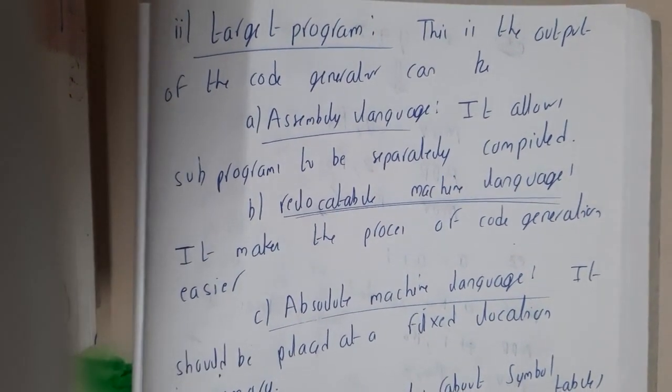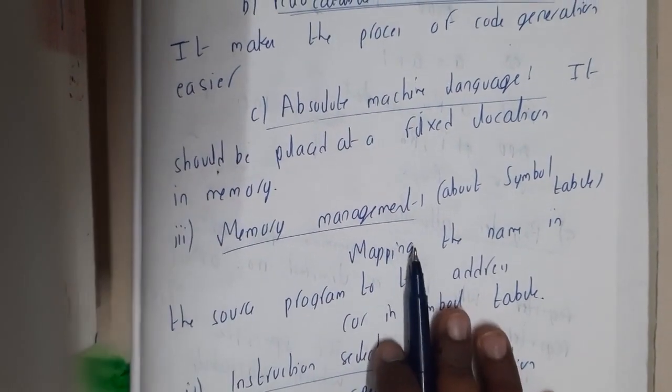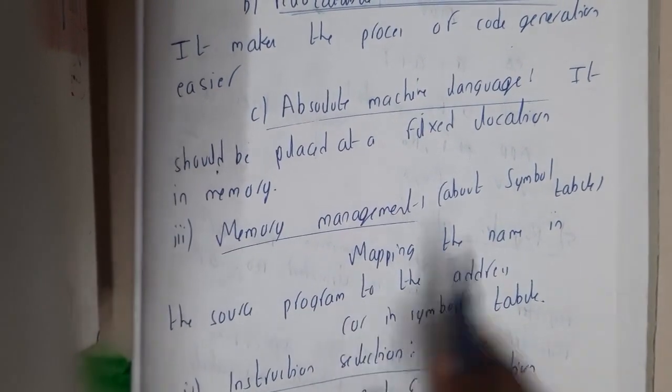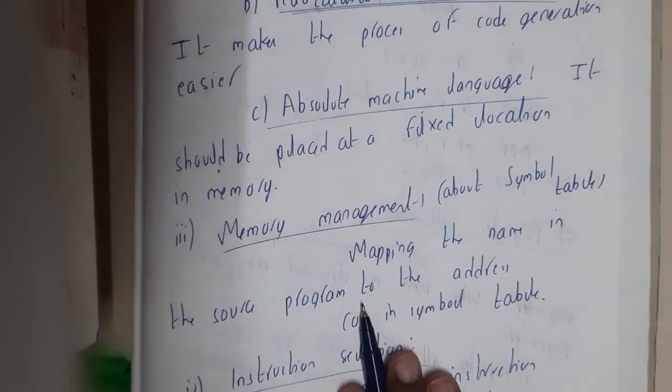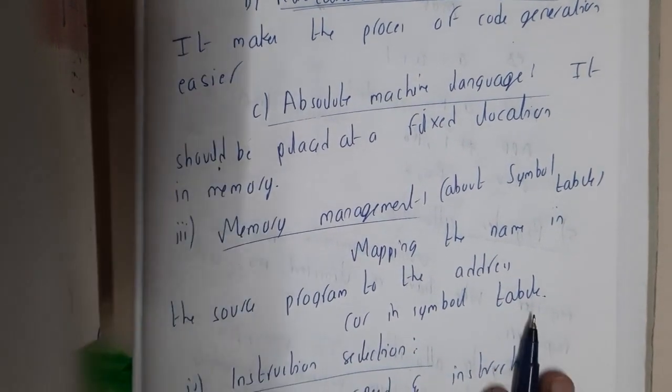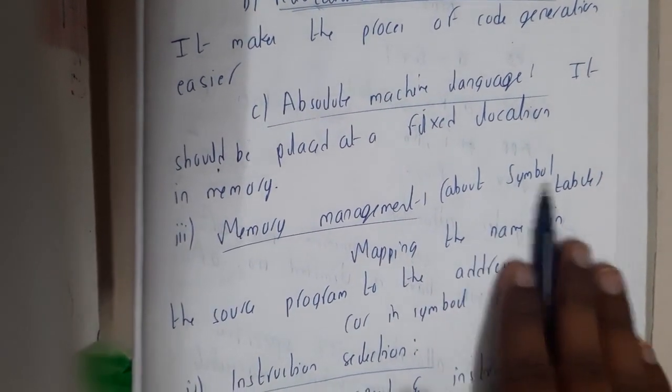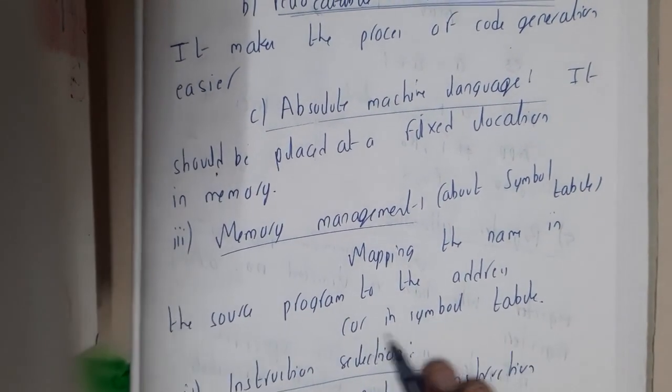Memory management is nothing but storing all the values in symbol table. So mapping the names in the source program to the address in symbol table is about memory management.